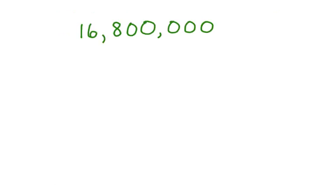How would we write 16,800,000 using scientific notation? Well first, let's move the decimal point 7 places. And we have 1.68 times 10 to the 7th.